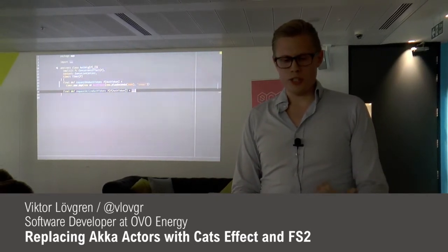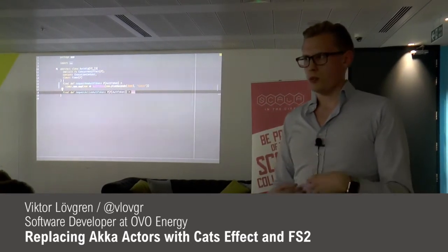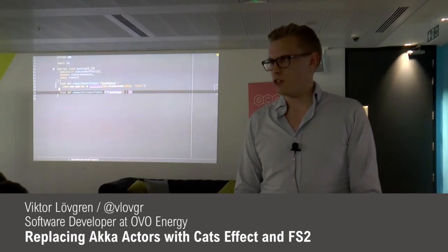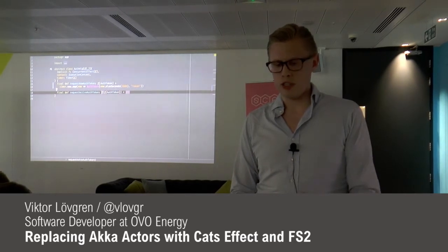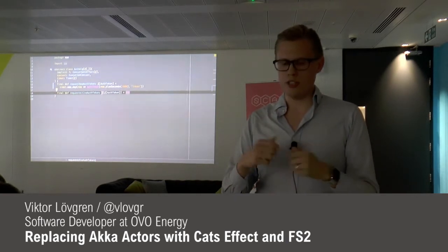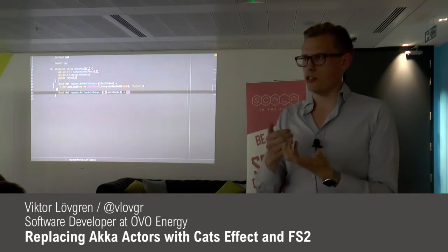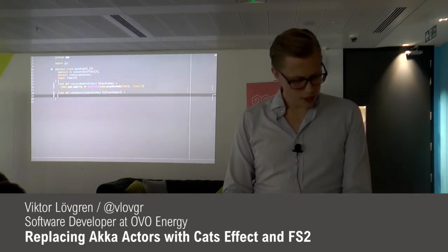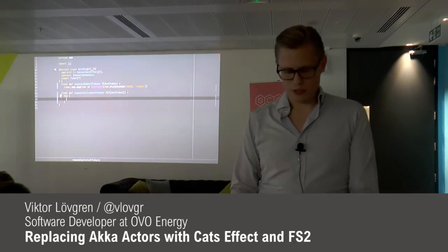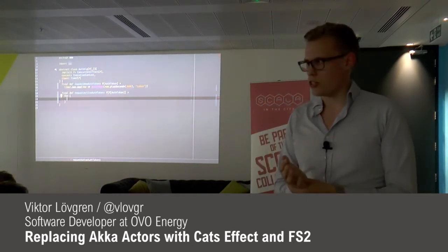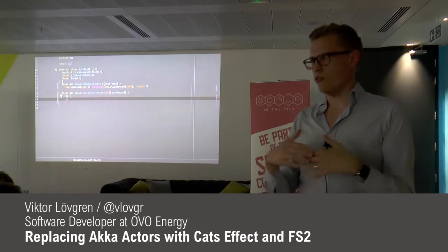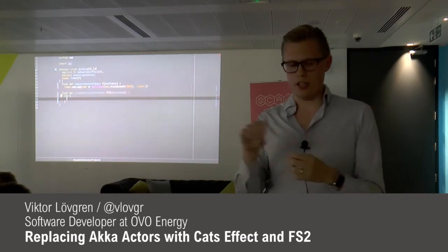And then we have requestActiveAuthToken. The idea is we always want to get an active auth token back whenever we use this. You can see it seems a bit strange - it has two Fs: F of F of AuthToken. The first F is usually what we call the creation effect - you have some state you want to create, you evaluate the first effect, and then you get another thing back which grabs the auth token. The first thing we're going to do is we need some state for the actor, right? A concurrency primitive you can use for that is called Ref. If you're familiar with Haskell, you might know IORef. It's basically an atomic reference or volatile variable, but it's enclosed in an IO layer, so it's pure.